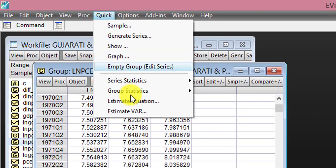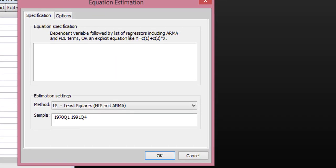You go to Quick, click on Estimate Equation, and here you list all your variables. The dependent variable first, LNPDI next, then LNGDP.